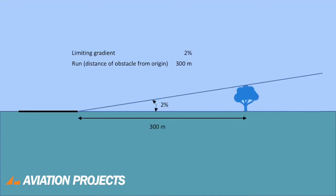Another way of looking at it is if we have a limiting gradient of 2%, then at a distance of 300 metres, an obstacle—in this case a tree—can be 6 metres high without penetrating the surface.